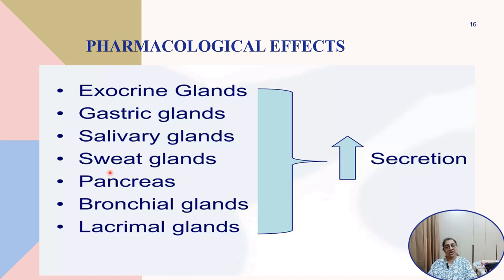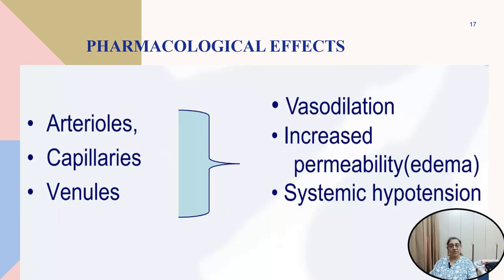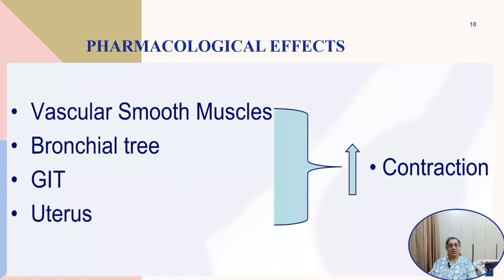Most of these secretions are increased due to H1 receptor stimulation, while gastric acid secretion is due to H2 receptor stimulation. Arterioles, capillaries, and venules undergo vasodilatation with increased permeability, leading to systemic hypotension. Vascular smooth muscle, bronchial, gastrointestinal smooth muscle, and uterine smooth muscle all show contraction.